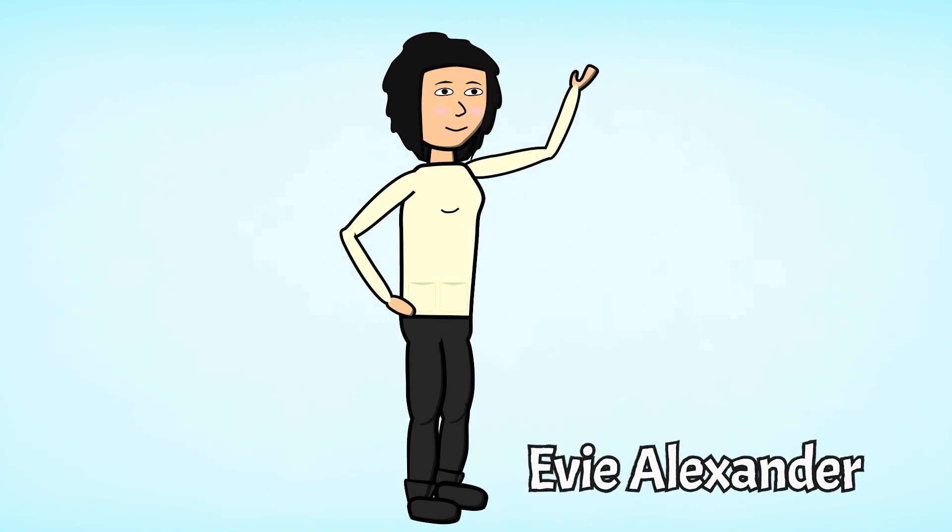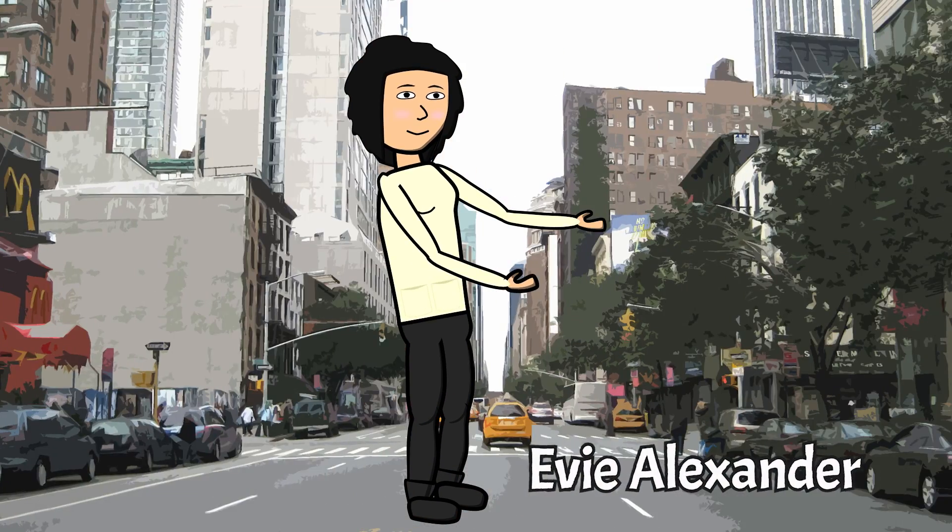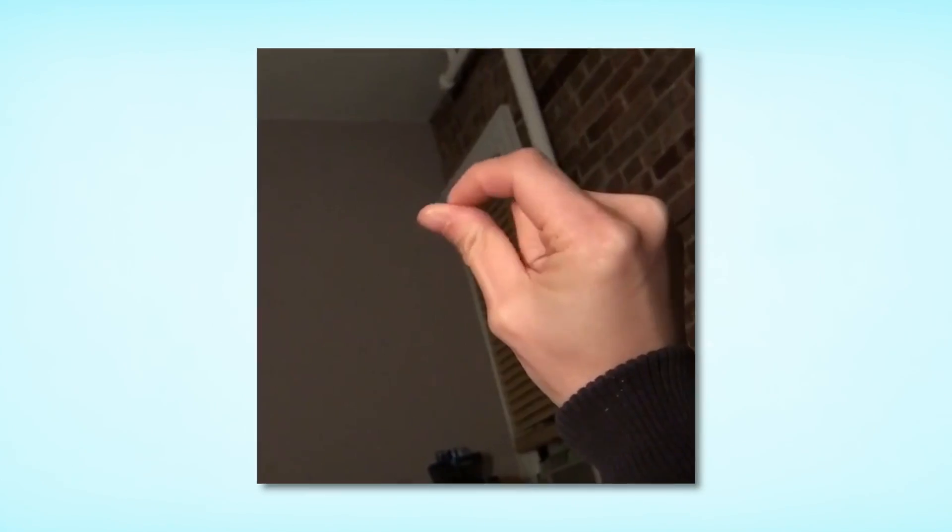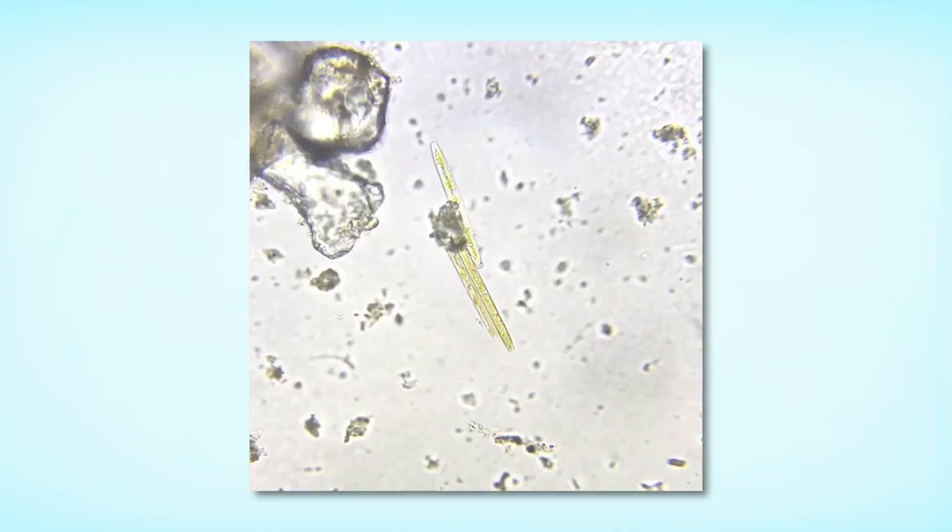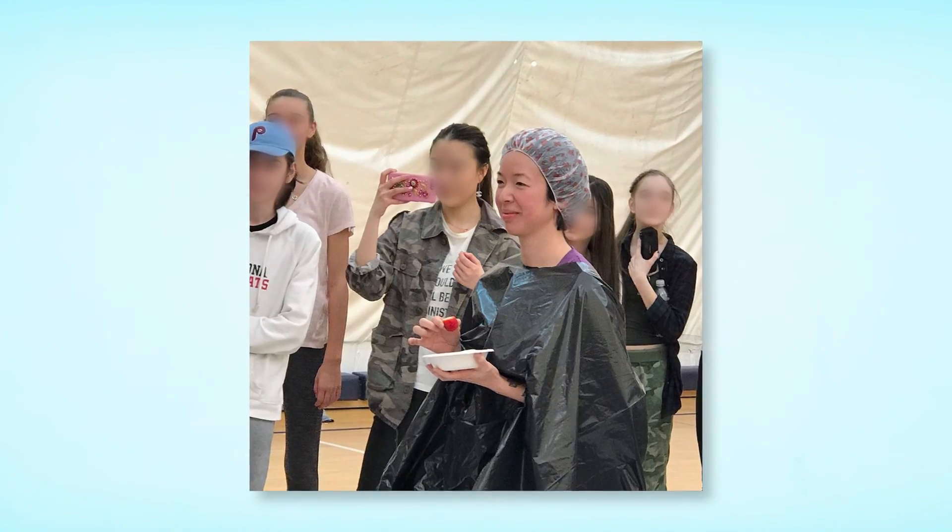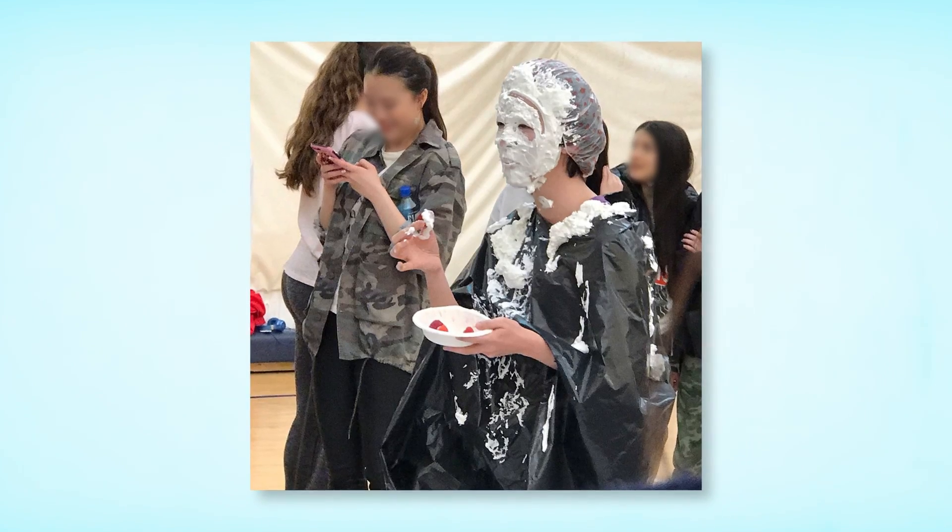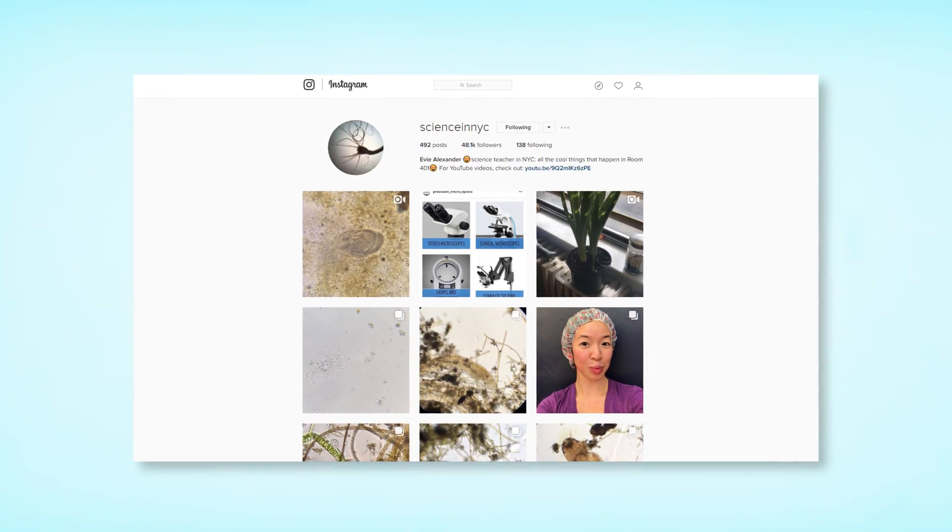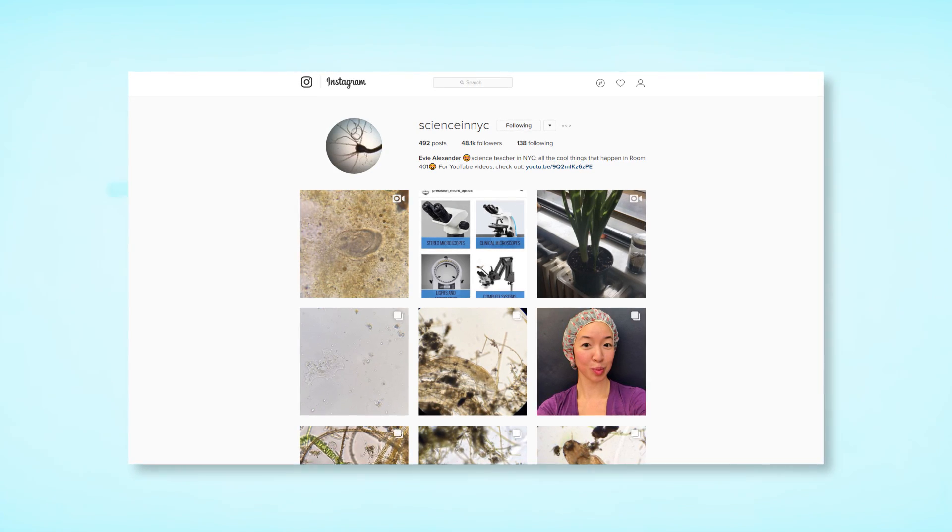I am Evie Alexander. I am a science teacher in New York City. Meet Evie Alexander, a science teacher in New York City with a very cool story. I used to be a microbiology researcher and a vet tech, but then I decided to get into education and teaching. But that's not all that's cool about Evie. She also runs a popular Instagram account showcasing the incredible world of microbiology.